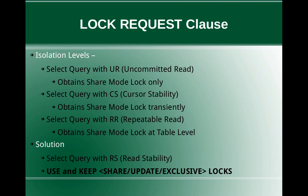The solution is to use the select query with the read stability isolation level along with the lock request clause. If you use only read stability, it will again obtain only a shared mode lock at the row level. The lock request clause options are: USE AND KEEP SHARE LOCKS, USE AND KEEP UPDATE LOCKS, or USE AND KEEP EXCLUSIVE LOCKS. When combined with read stability, this clause influences the underlying locking to acquire either an update lock or an exclusive lock as requested. Using the share lock option is the default and will still acquire only a shared lock.